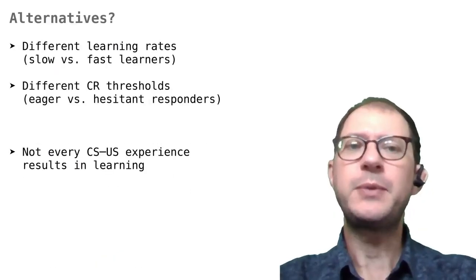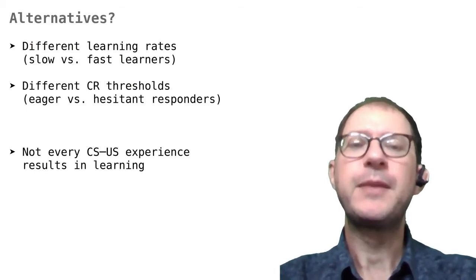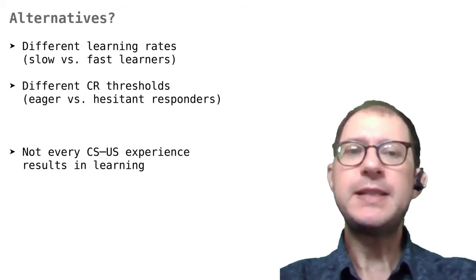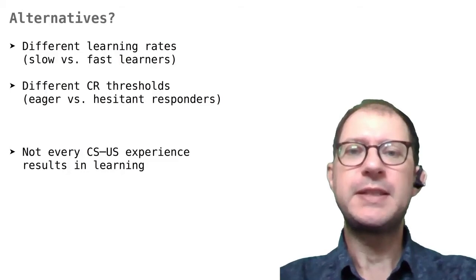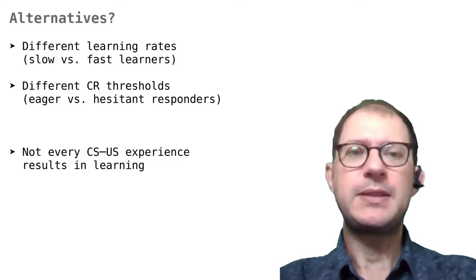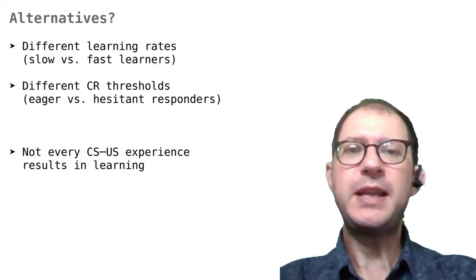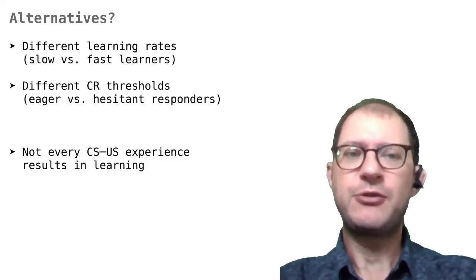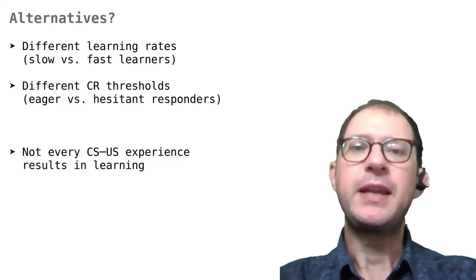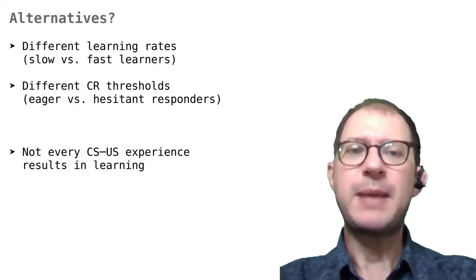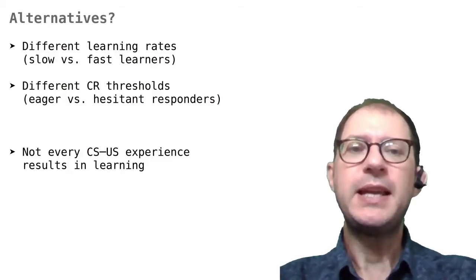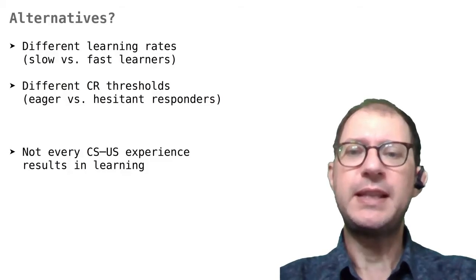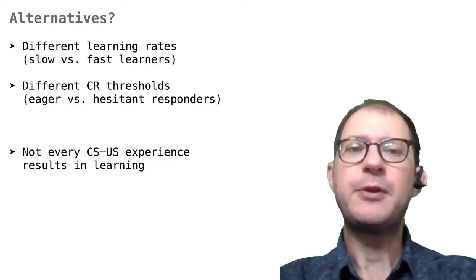There are a few things that we can try to improve RW. For example, it may be unrealistic to think that all rabbits learn at the same speed. Maybe some rabbits start to respond later because they take longer to notice the connection between CS and US. In RW this would mean that these rabbits have a low learning rate alpha. Another possibility is that some rabbits respond more easily than others, given that they have learned the same.